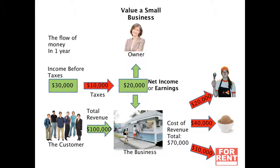Where we left off in Lesson 2 was that we had a small business owner whose name was Nancy. She had a small ice cream business. The ice cream business had $100,000 in revenue, and as it went through all the different costs, she eventually ended up with $20,000 of net income or earnings. That's the amount of money that's left after the entire business model. Nancy had two options: she could keep that money for herself or put the money back into the business.